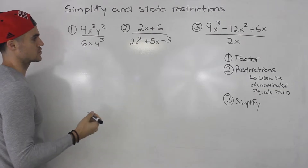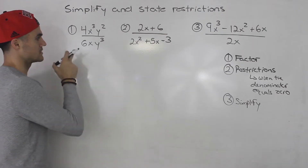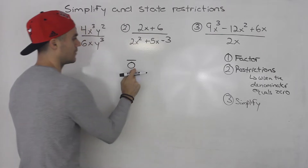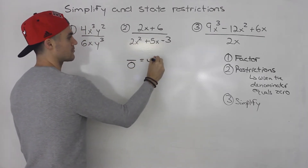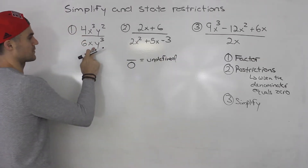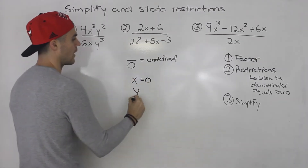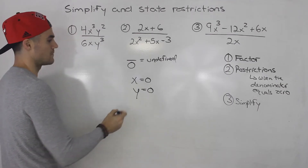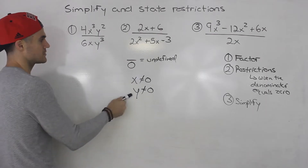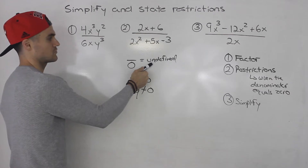Step two: state restrictions. Variables cannot make the denominator equal to zero, because whenever we divide by zero, that gives us something that is undefined. So when can the denominator equal zero here? If x is equal to zero, the denominator would be zero. And if y is equal to zero, the denominator would be zero as well. So x cannot equal zero, and y cannot equal zero — because if either does, the rational expression would be undefined.